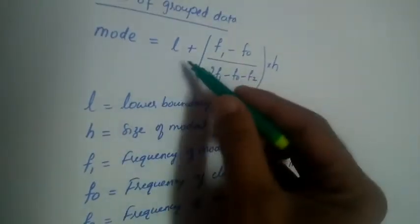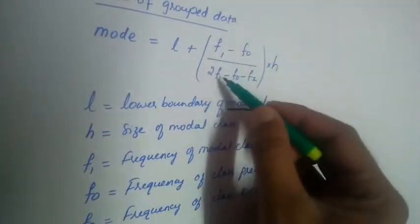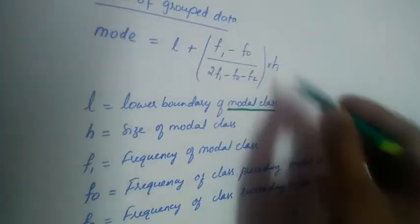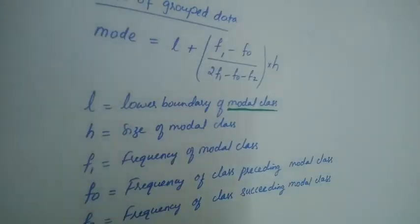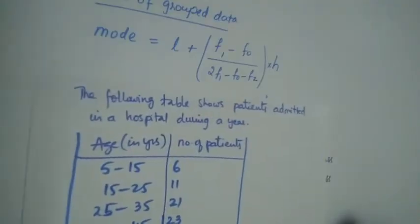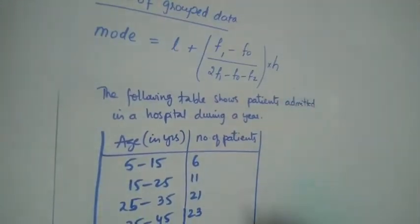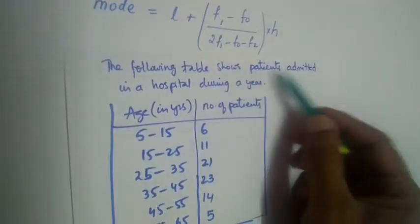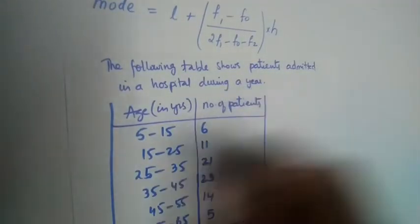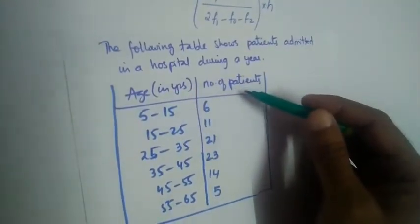So mode equals L plus F1 minus F0, divided by 2F1 minus F0 minus F2, multiplied by H. I have an example here. Let us find the mode. The following table shows patients admitted in a hospital during a year, with age and number of patients.